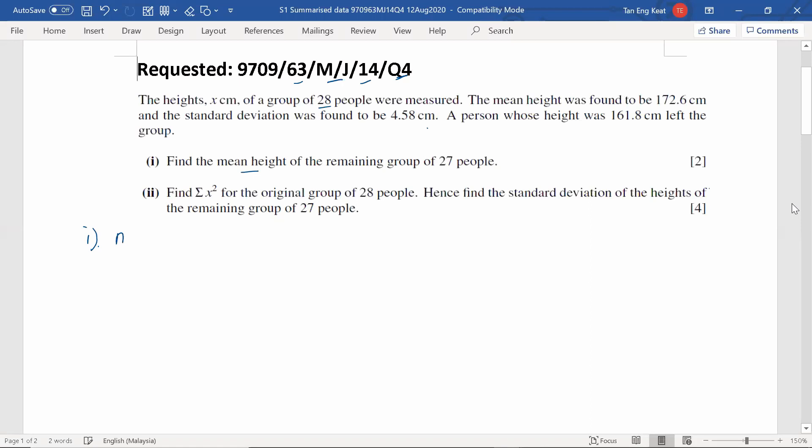Now, n is 28. The mean for 28 people is 172.6. So what do we do? First, we try to use the mean formula: sigma X over n.